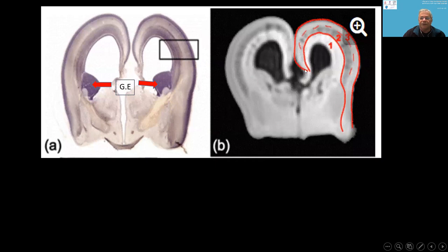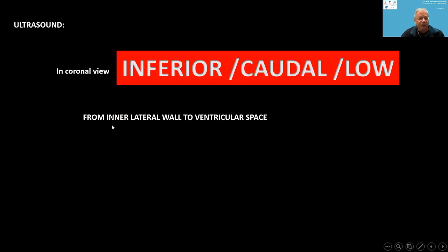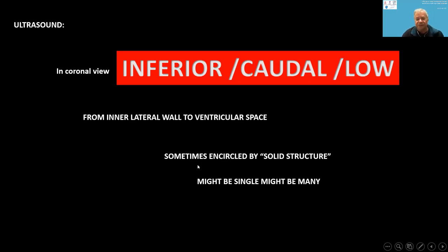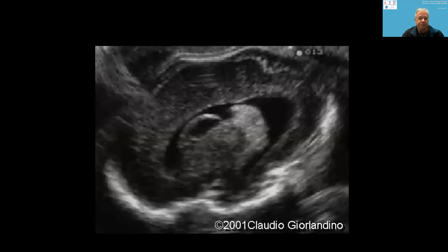Here is a micro-MRI of a fetus at week 12, showing the thalami and the ganglionic eminence. According to gestational weeks — very large at week 15, week 20, 26, 29, 36 — and around one year of life they disappear. On ultrasound in coronal views, they are inferior or caudal on the inner lateral wall of the ventricular space, sometimes encircled by solid structure. They might be single or multiple.